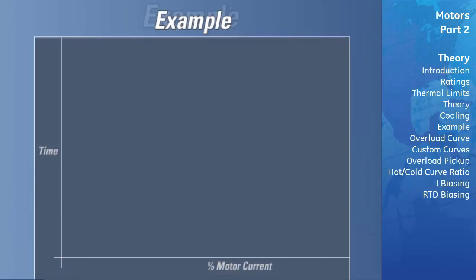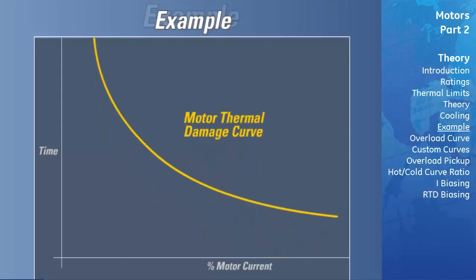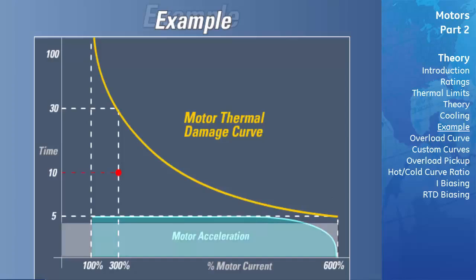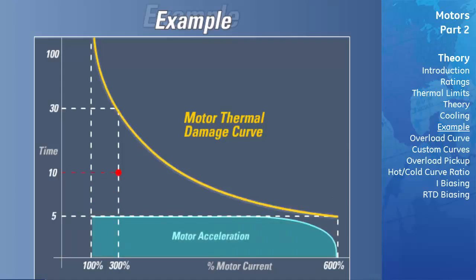Now let's see how the thermal model works with a hypothetical situation. For a given motor, the thermal damage and acceleration curves are shown in this diagram. From a quick look, the acceleration curve barely fits under the stall limits portion of the thermal limits curve. The protection relay tripped 10 seconds into the start. The customer notes that during the start, the motor drew 600% rated current for 4 seconds, then the current dropped to 300% for only 6 seconds before the relay tripped. Given that the thermal damage curve was selected correctly, the customer wants to know why the relay tripped even though the current draw did not exceed the thermal damage curve limits.